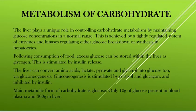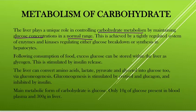In this video I'm going to discuss the metabolism of carbohydrate, specifically in the liver. The liver plays its role in controlling carbohydrate metabolism by maintaining blood glucose concentration within the normal range. The normal range is around 140 mg per deciliter, which is approximately 7.8 millimole per liter. This is achieved by a regulated system of enzymes like salivary amylase, maltase, sucrase, lactase, and also kinases regulating glucose breakdown or synthesis in hepatocytes, which are the liver cells.